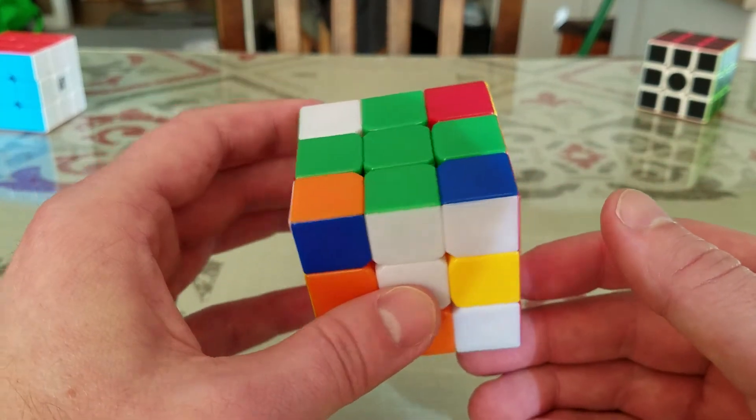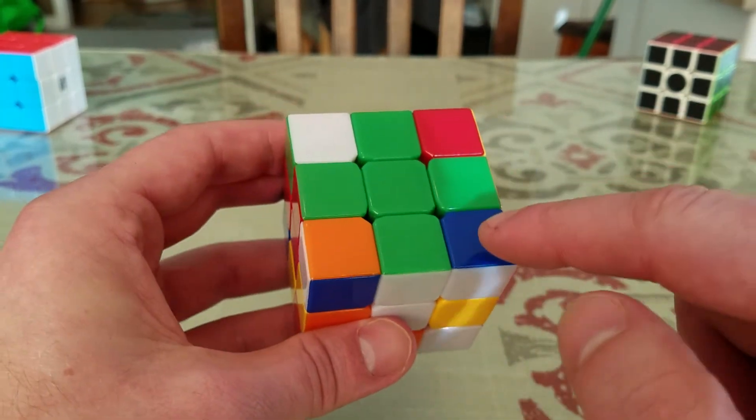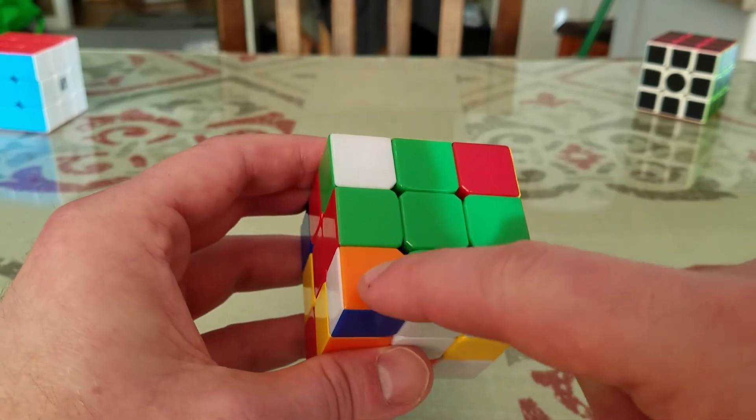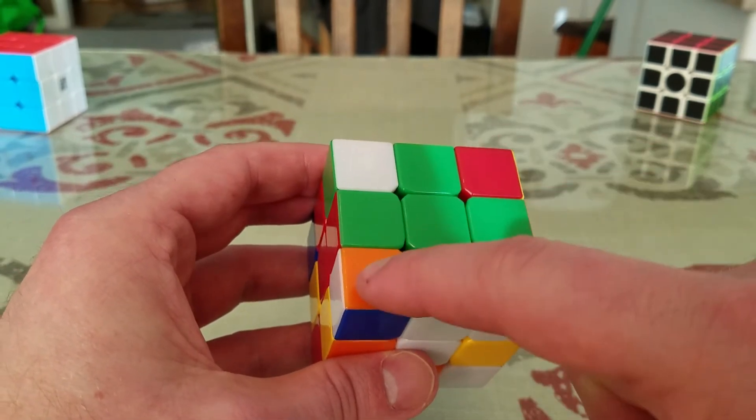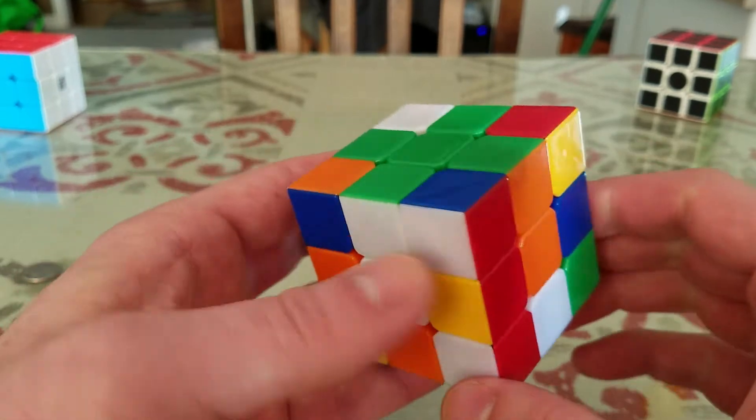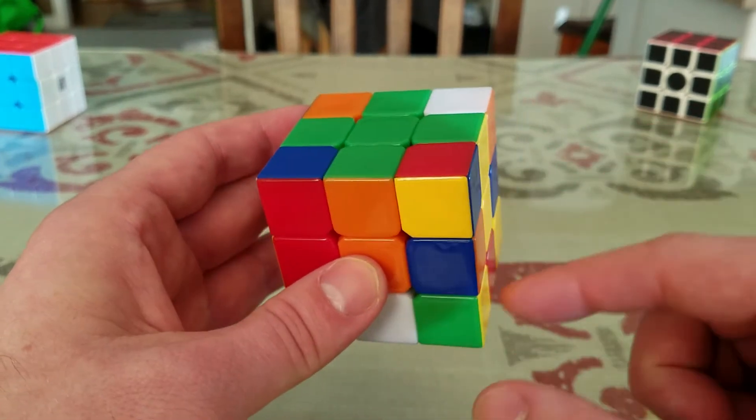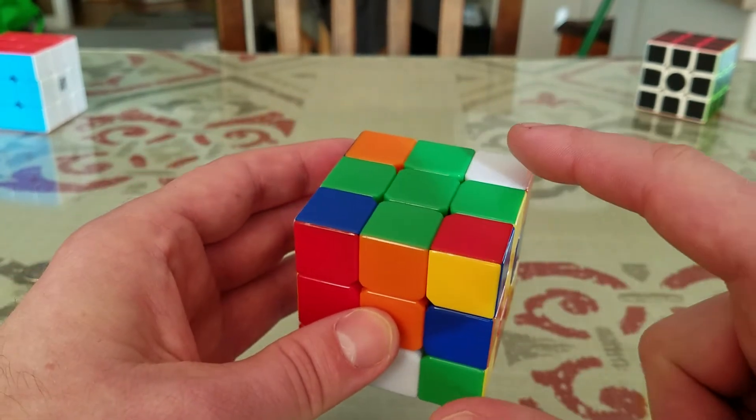If you've completed the green cross, the next step is going to be to solve the green corners. Now in this case, none of the corners are already done, so we're going to start by locating the appropriate corner for each side.